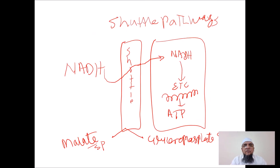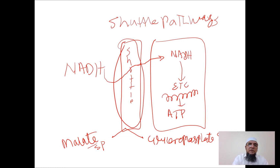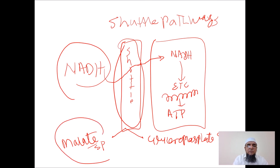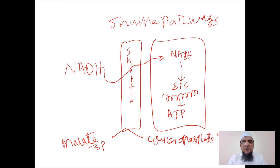We will stop here and in the next session, we will discuss the shuttle pathways — how NADH is transferred into the mitochondria with the help of shuttle pathways. There are two kinds of shuttle pathways: one is the malate-aspartate shuttle, and the other is the glycerophosphate shuttle. Thank you very much, and best of luck. Kindly send us your feedback and comments, as they will help us improve our next session.